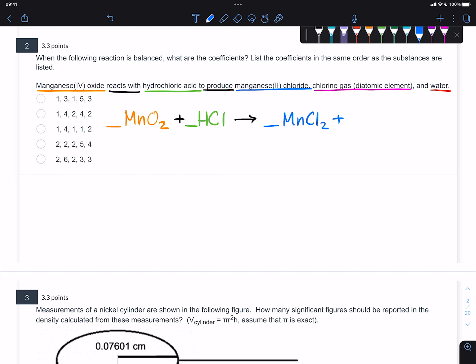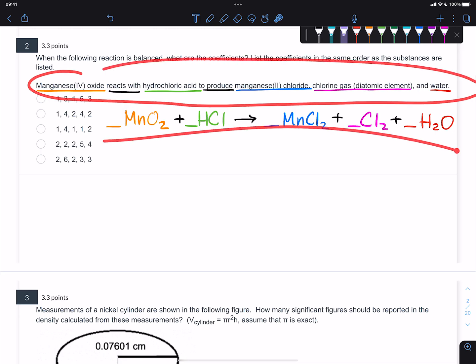So here we have manganese(II) chloride. We also have, as a product, chlorine gas. It tells you it's diatomic, which I think is actually kind of nice because you certainly should know the seven diatomic elements. And then it says, and water, which is just H2O. So that's how you get to this stage and then you're kind of good because from here it's really just counting.